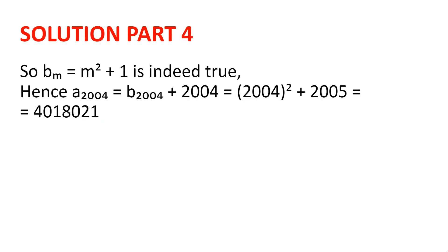So we have shown that b(n) = n²+1. And hence a(2004) = b(2004) + 2004 = 2004² + 1 + 2004 = 2004² + 2005, which equals 4,018,021. And so we are done.